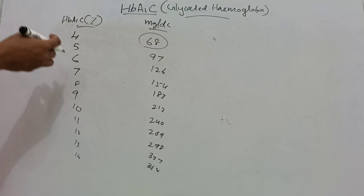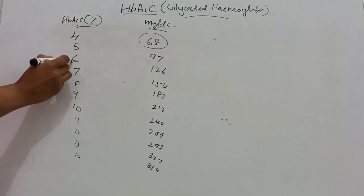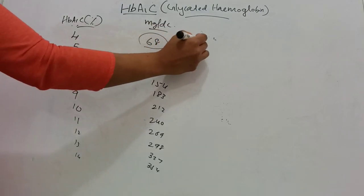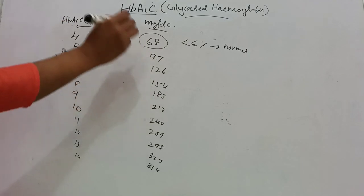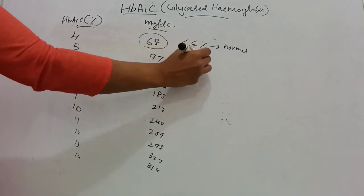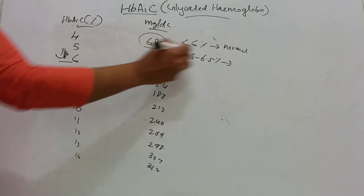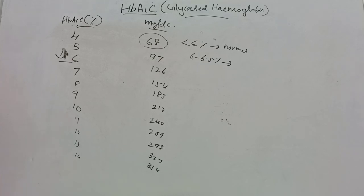If the level is less than 6%, it will be normal. Between 6 to 6.5% is pre-diabetes, that means there will be a risk of developing diabetes.